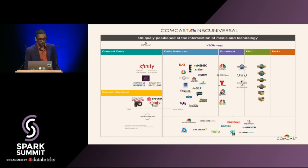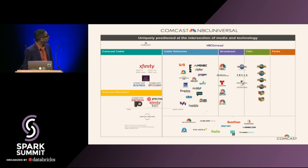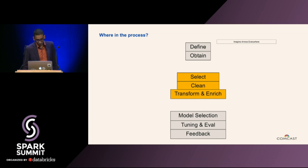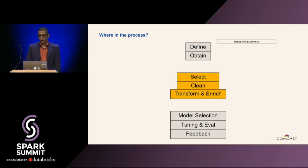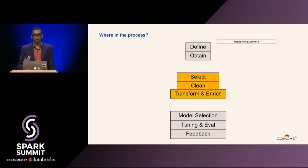To give a quick overview of what Comcast does in my space: it's all the way on the left on the Comcast cable side, focusing on broadband. But we also own Parks, Hulu, BuzzFeed, and a few other things. In the machine learning process, we're right there in the middle. You need to define your problem, obtain your data, then go into selecting, cleaning, and transformation of your data. Then you go into model selection, tuning, and evaluation, and close it all with a feedback loop to let you know when your model's drifting, when you need to retrain, or when you need to shut down.